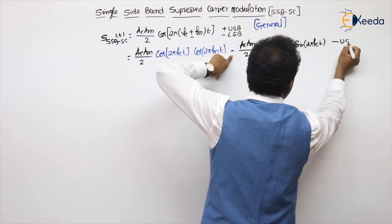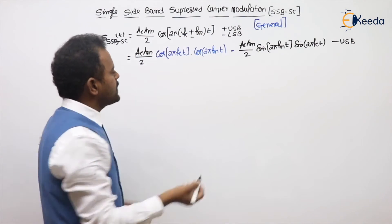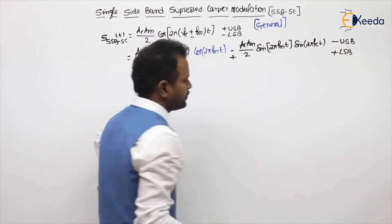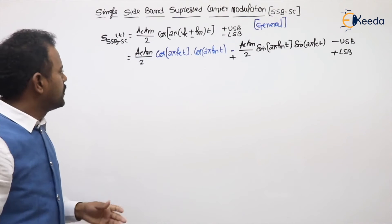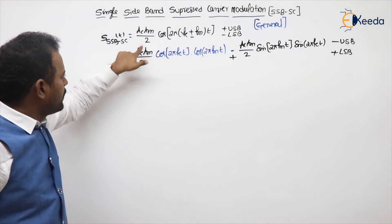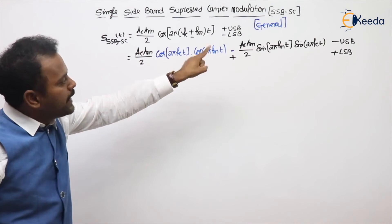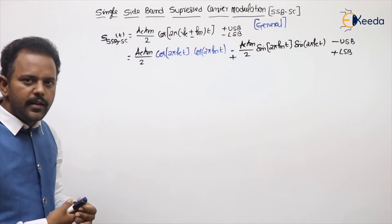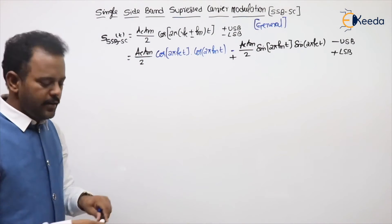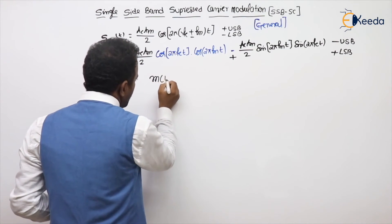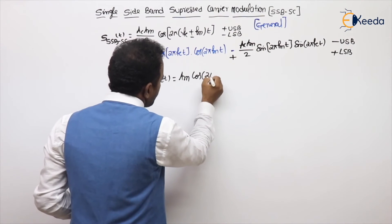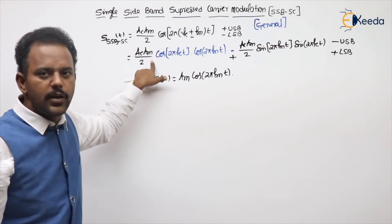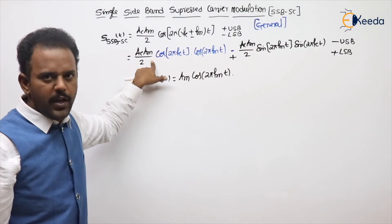After expanding, here it becomes minus, so minus is per USB (upper sideband). Suppose if I take minus sign, here plus will come, and that plus indicates LSB (lower sideband). So (AC·AM)/2 is common: for cos(A + B) we get cos(A)cos(B) − sin(A)sin(B), and for cos(A − B) we get plus. This expression was obtained by taking the message signal m(t) = AM cos(2π fm t), giving us the single-tone expression.